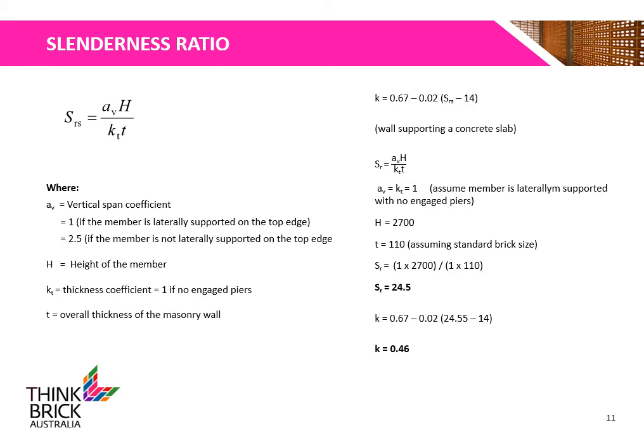The slenderness ratio is given by the equation shown, where Av is the vertical span coefficient, H is the height of the member, Kt is the thickness coefficient, and t is the overall thickness of the masonry wall. As our wall is loaded by a concrete slab, we use the given equation. With Av and Kt both equal to 1, a wall height of 2.7 meters, and a unit thickness of 110 mm, the slenderness ratio is 24.5 and the reduction factor K is 0.46.